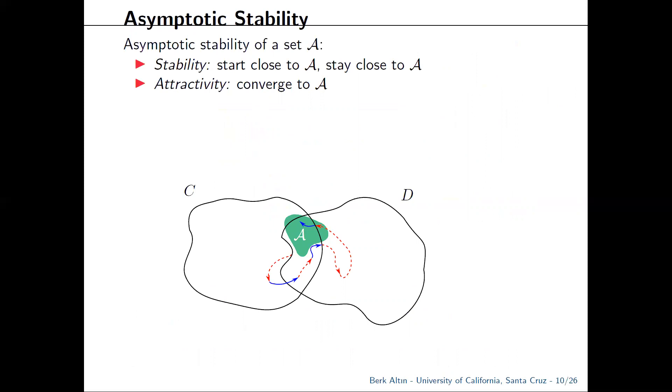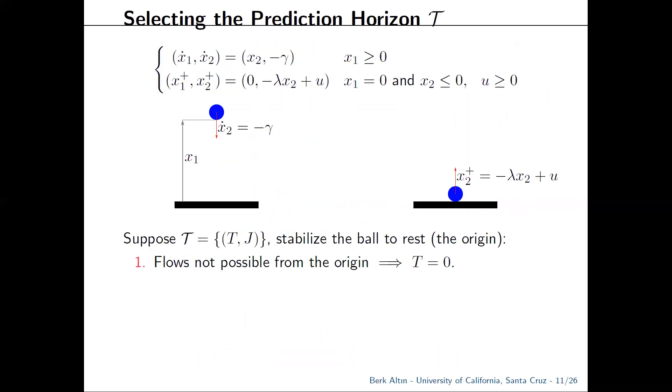For that, you want that solutions starting close to A stay close to A in the usual sense. And you also want solutions to converge to A as t plus j tends to infinity.